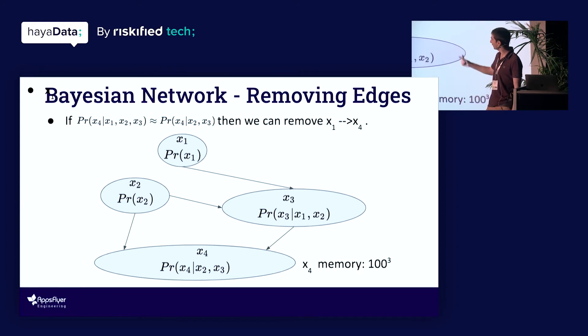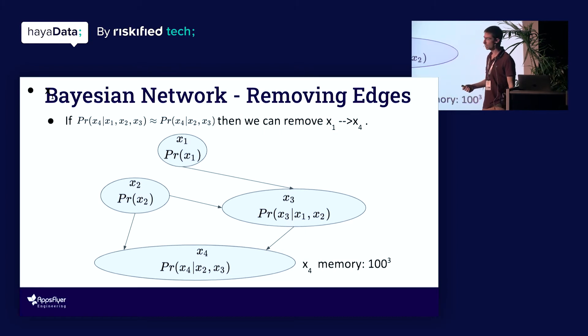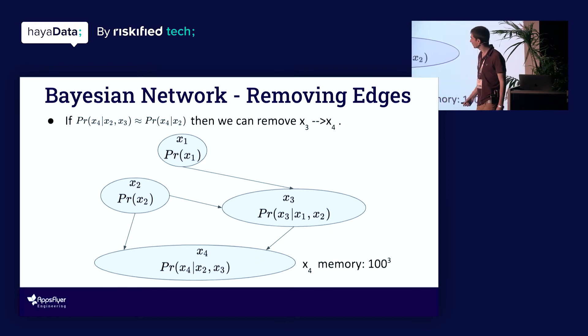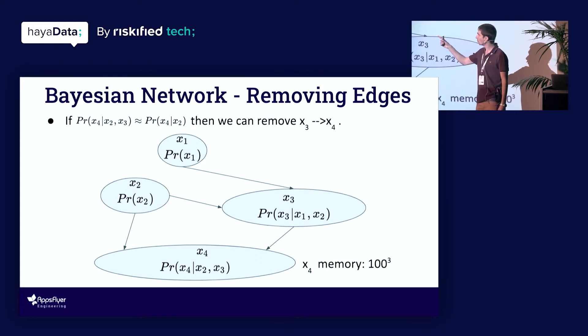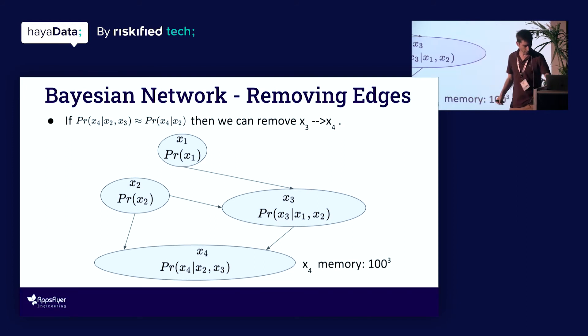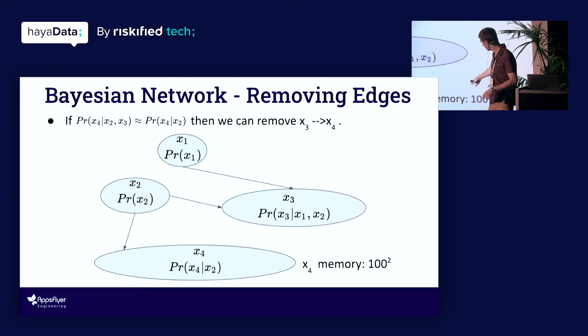By the way, to sort of test the dependency or independency, we used chi-square test, a statistical test for dependency testing. Maybe some variation over it for conditional dependence here. But that's basically it. And let's continue with the example and assume that now probably for seeing x4 given x2 and x3 is roughly the same as seeing x4 given only x2. That x3 doesn't really add any information. Then we'll remove the edge from x3 to x4. And we'll reduce the memory of x4 further now to a hundred square.